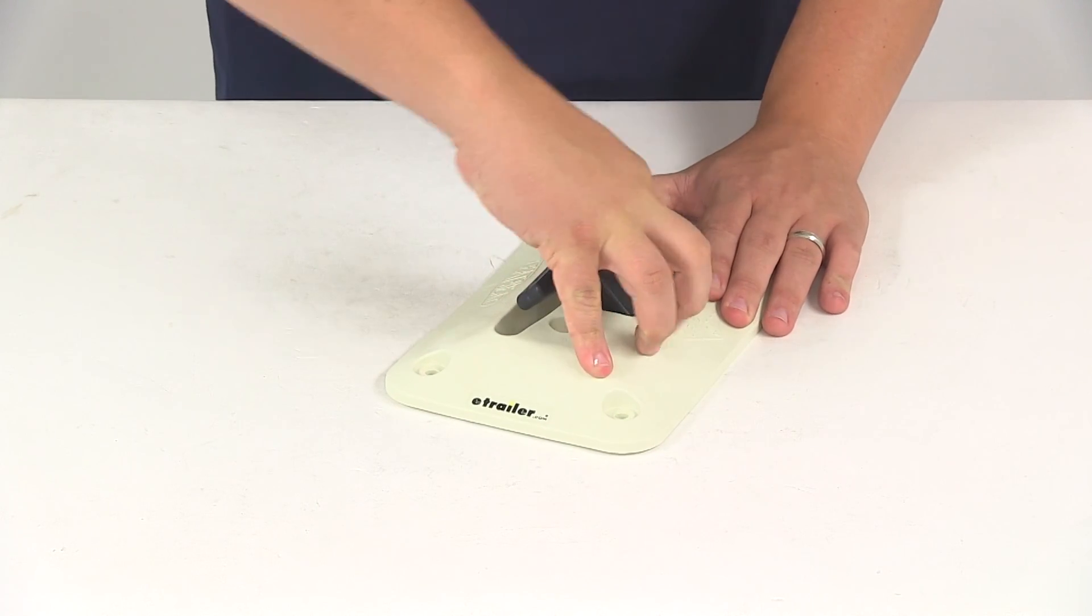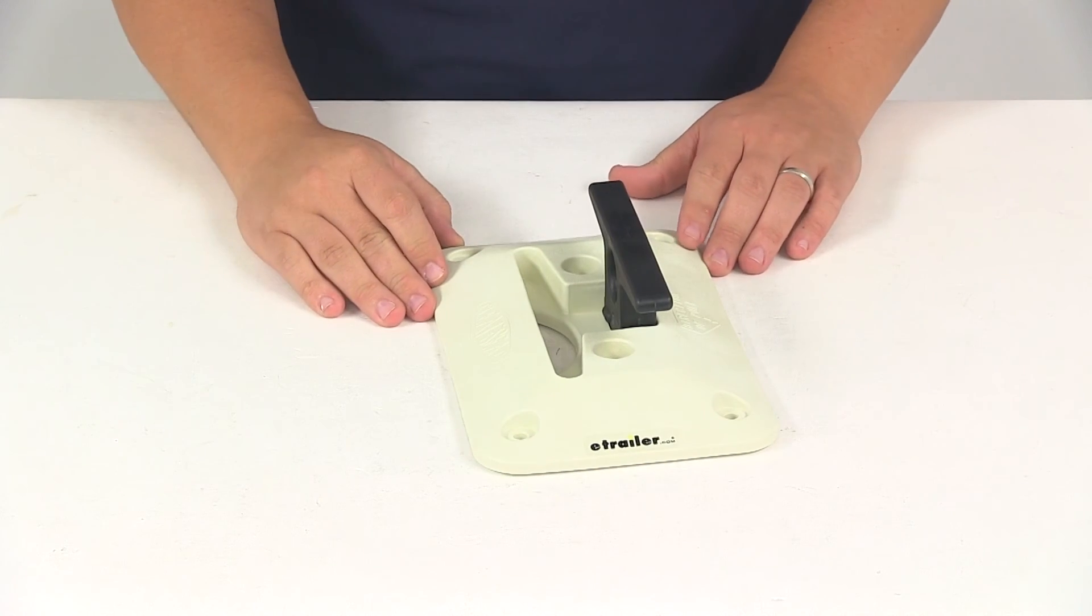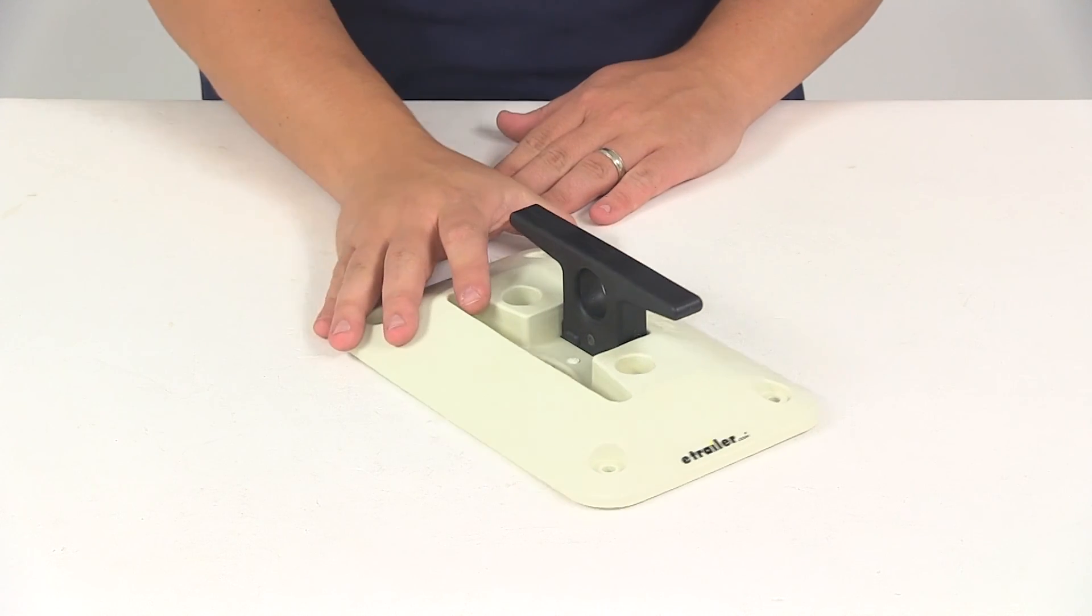That's going to do it for today's review of part number CM02101. This is the SEPA retractable dock cleat.